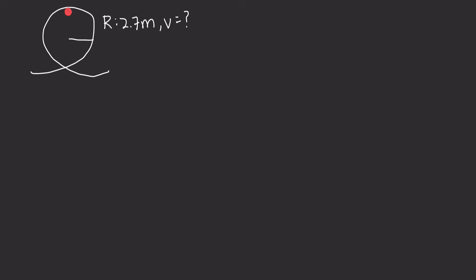We can assume that this ball travels through the top of the loop in something known as uniform circular motion. Uniform circular motion means there is a specific relationship between the particle's acceleration and its velocity, given by the equation a equals v squared over r.